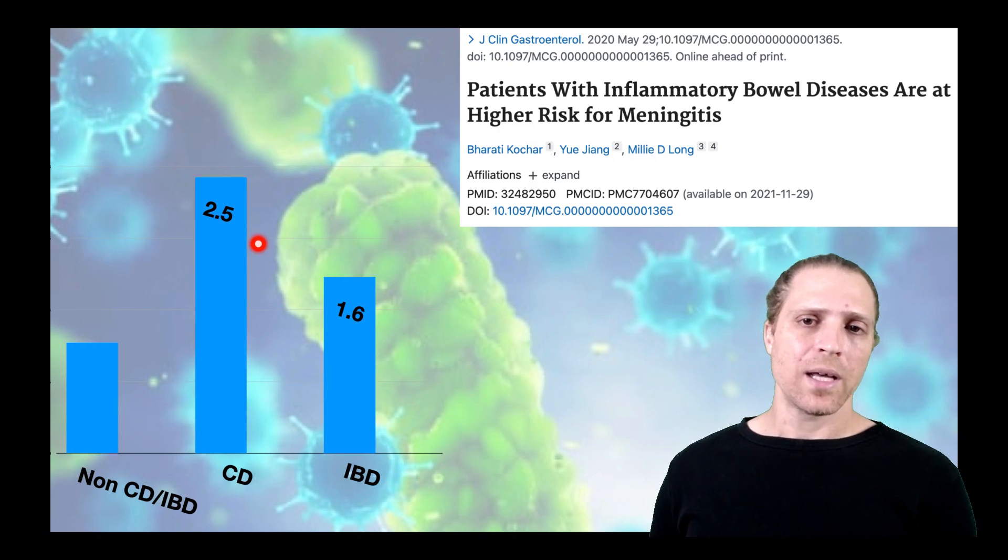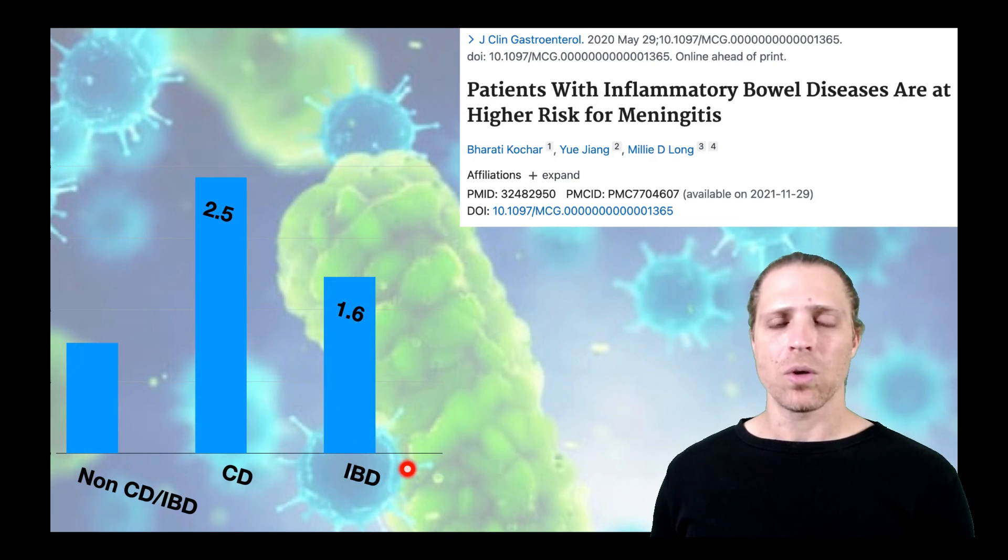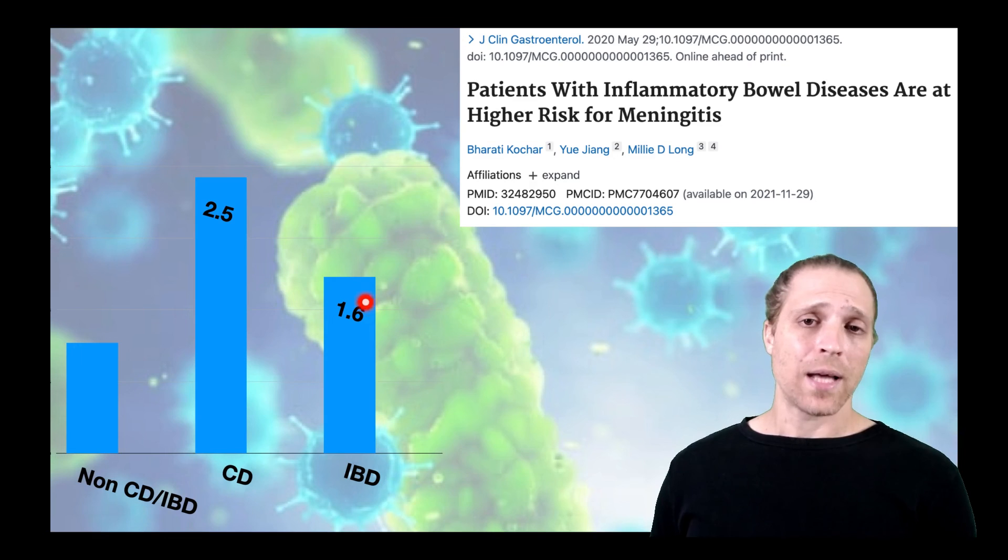And what they specifically found was that individuals that have Crohn's disease are showing a two-and-a-half-fold higher susceptibility to meningitis compared to individuals that do not have Crohn's disease. And individuals with inflammatory bowel disease have a 1.6-fold higher risk for meningitis compared to non-sick individuals.